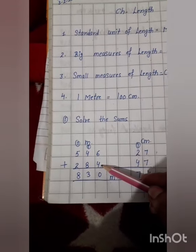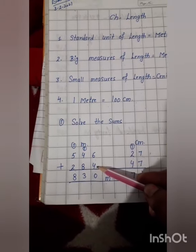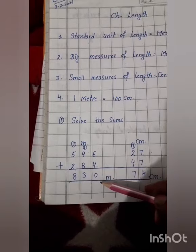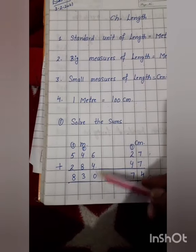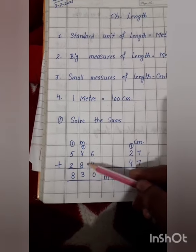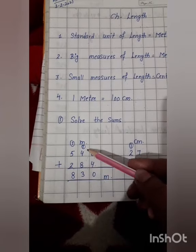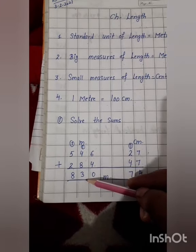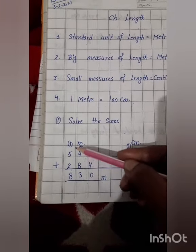6 added to 4, it's 10. 1 carry and 0 here. 4 added to 8, 12 and 1 carry, 13. 3 here and 1 carry.